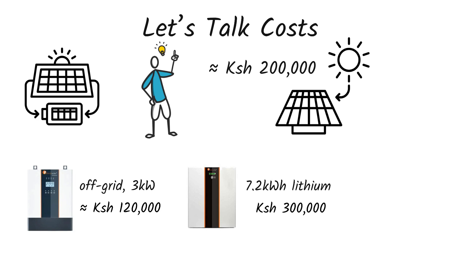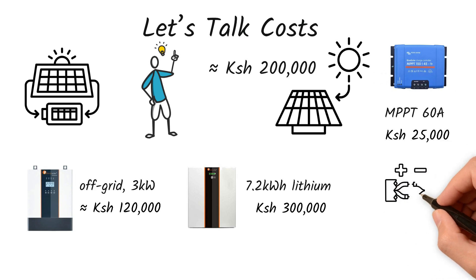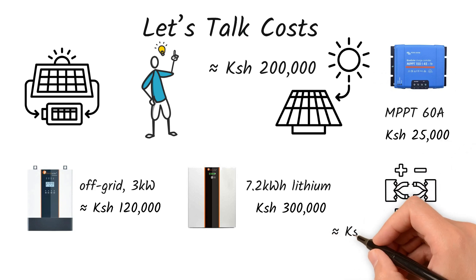A charge controller, the MPPT version 60 amps, can cost around 25,000 shillings. The mounting and wiring can cost between 50,000 to 80,000 shillings.